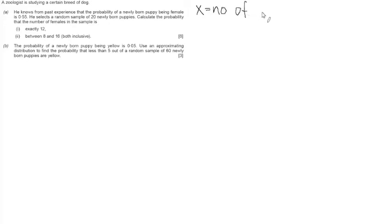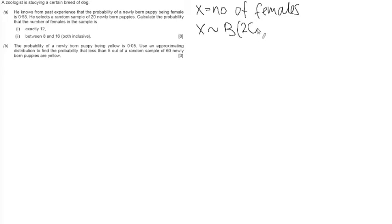What we're talking about here is a binomial distribution because these puppies can either be male or female, so it's a 1 out of 2 choice. As we do with any distribution question for Poisson or binomial, we start by defining the distribution. We let X equal the number of females, and state that X is distributed binomially with a sample number of 20 and a probability of success of 0.55.